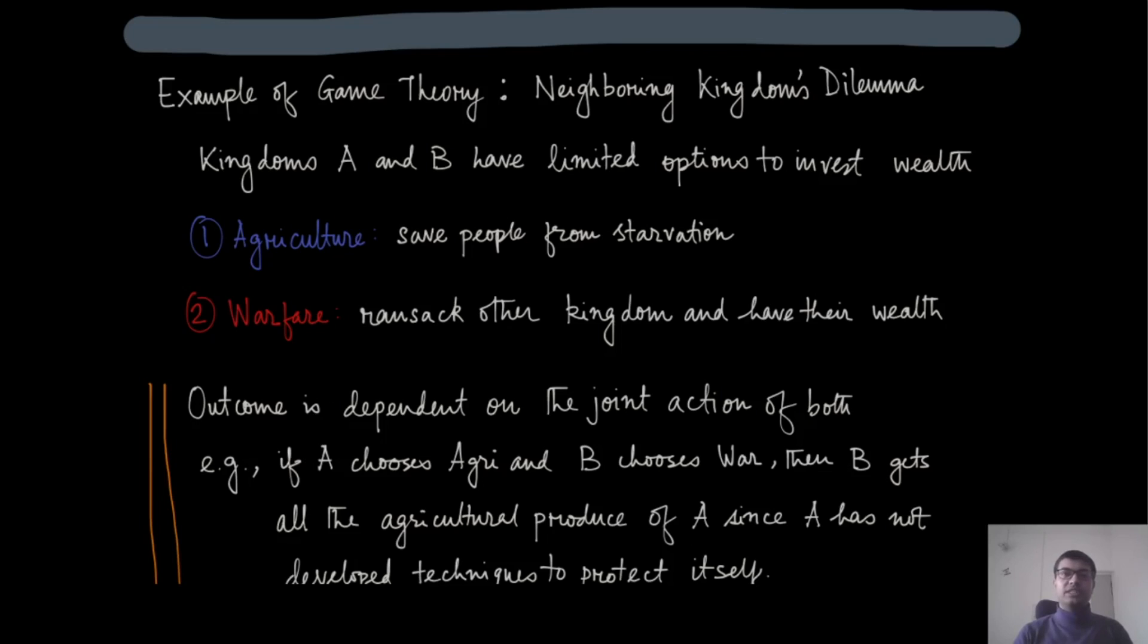We are going to discuss a game called neighboring kingdoms dilemma, which is quite analogous to the prisoner's dilemma. Suppose there are two kingdoms A and B, and they have limited options to invest their wealth. Either they can invest their wealth in agriculture and save their people from starvation, or they can spend their wealth into warfare so they can attack the other kingdom and have their wealth as their own. For the time being, let us assume that they can invest wealth only in one of them and cannot distribute their wealth among both.